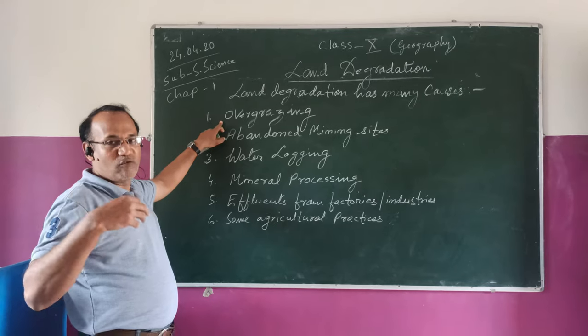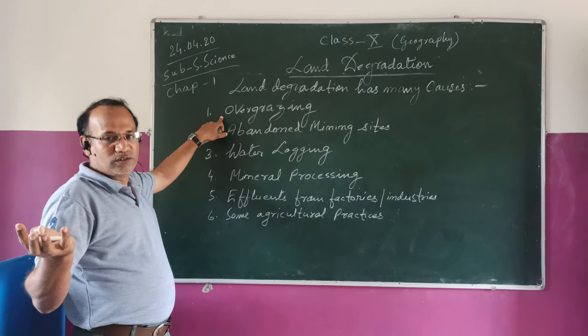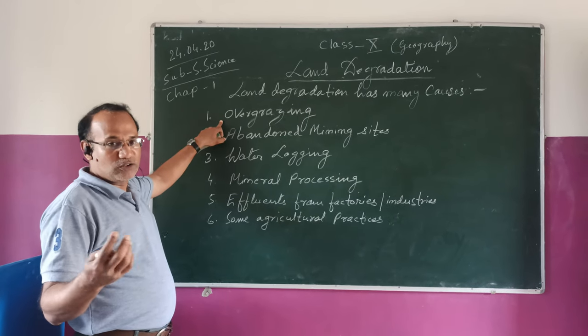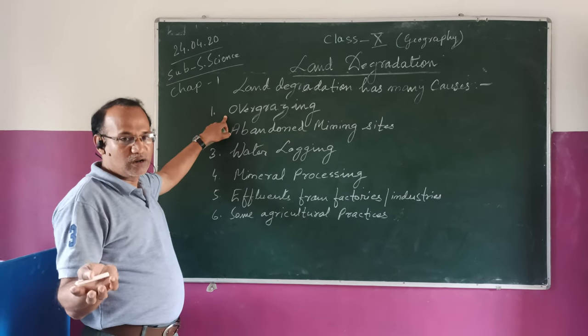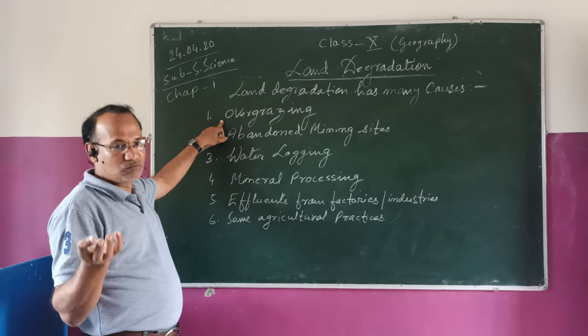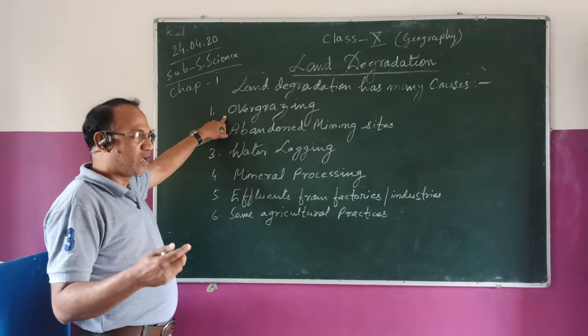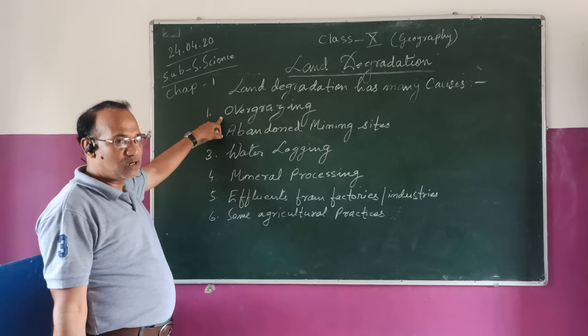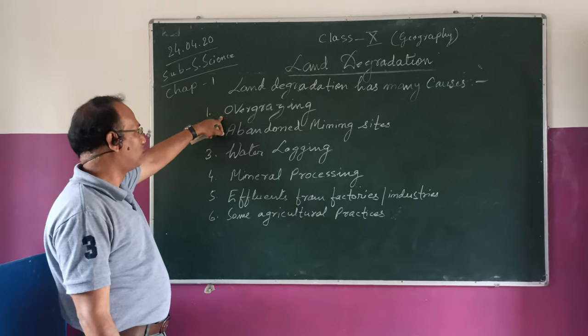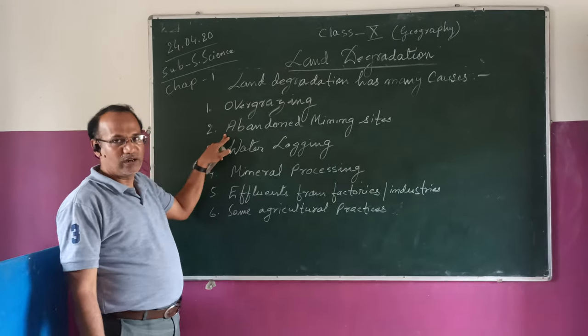Overgrazing — when herders graze their cattle more than the land can support — causes land degradation.